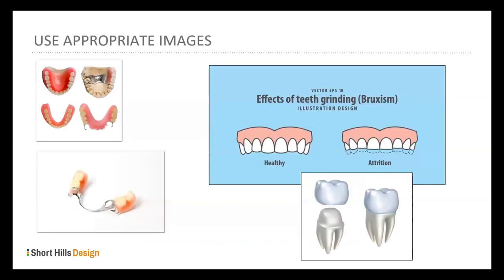Use appropriate images — make sure any image you have on your website is legal, meaning you own the license. Here are appropriate images: a partial, a picture of a crown, a picture of attrition. Notice there are no prepped teeth or bloody sockets. Keep it that way, please. If you're going to show a video of surgery, put a warning that says graphic content ahead. Don't surprise people with images they're not used to seeing.